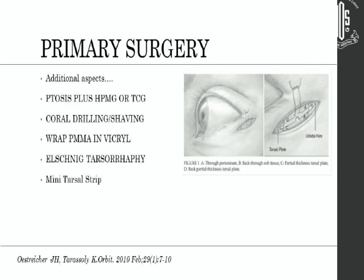We have already discussed the primary surgeries. A few points we don't tend to do much here: TOS correction of the upper lid along with the typical lower lid lag — one might use a tarsoconjunctival switch where you take out the tarsoconjunctiva from above, shorten the upper lid, put it down as a graft, and elevate the lower lid. For coral or porous implants, consider drilling and shaving in case of implant exposure instead of removing it. One might also consider wrapping PMMA in Vicryl, which helps with implant migrations and exposures.